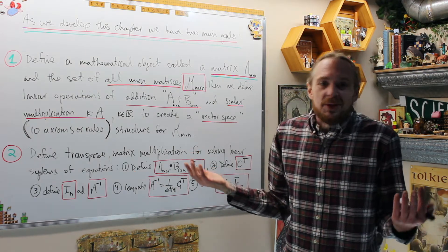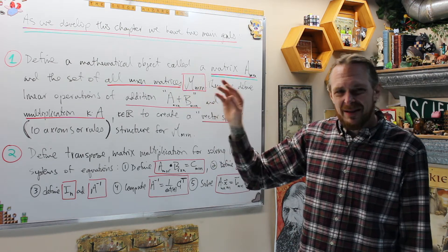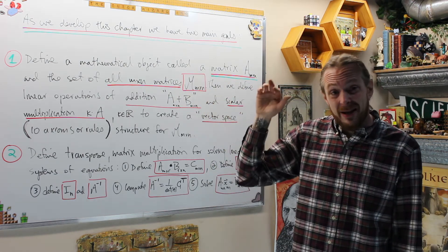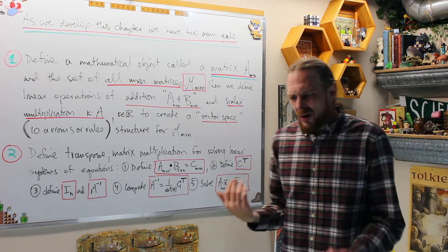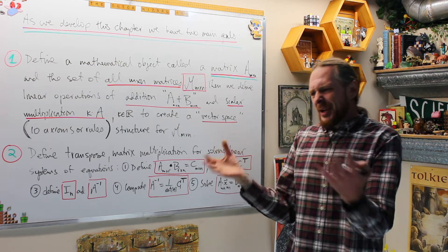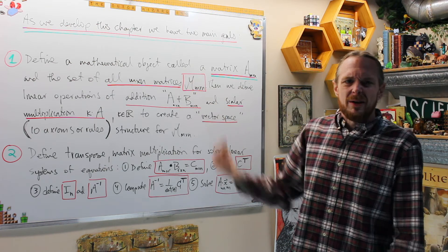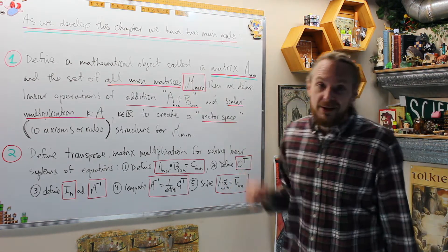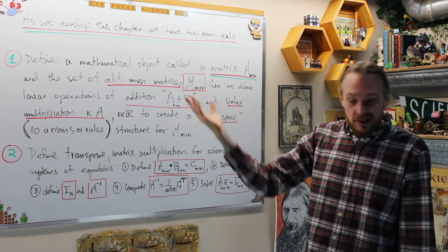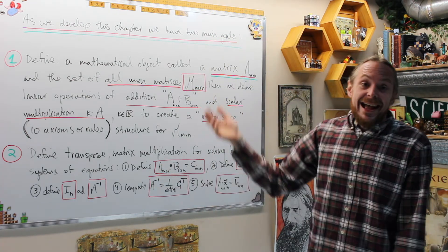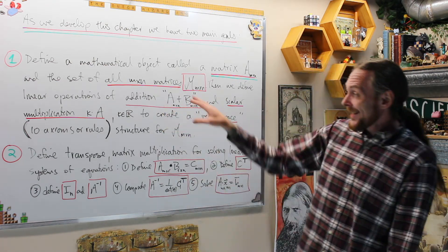Chapter 2 is going to move into the general scenario of the mathematical object called a matrix. We're going to define the set of all matrices, and ask how we can combine matrices. The first definition is equality: when are two matrices equal? They're equal when all of their corresponding entries are equal. Once we establish that, we ask: could we combine them in some way? And so we define those linear operations.